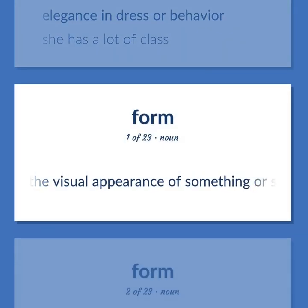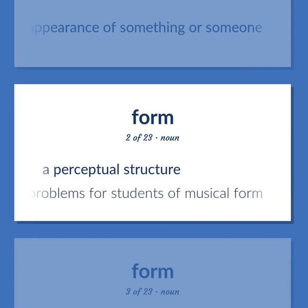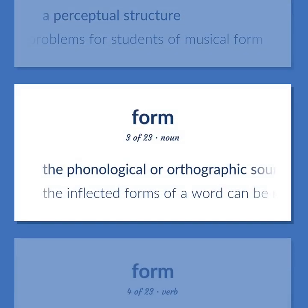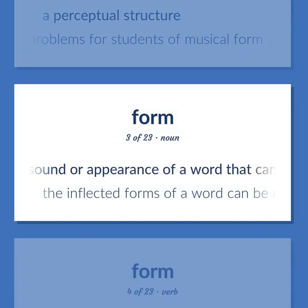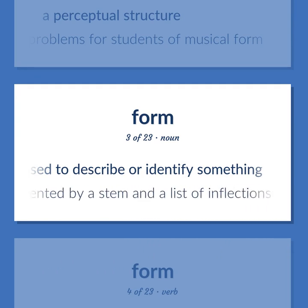The visual appearance of something or someone. A perceptual structure. The composition presents problems for students of musical form. The phonological or orthographic sound or appearance of a word that can be used to describe or identify something. The inflected forms of a word can be represented by a stem in a list of inflections to be attached.